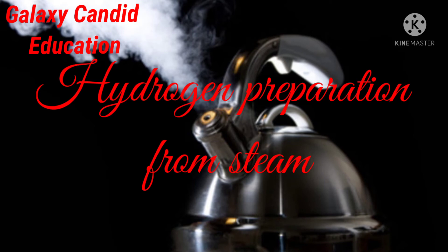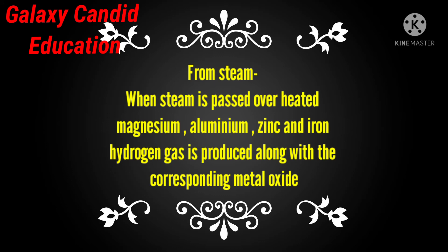Hydrogen preparation from steam: When steam is passed over heated magnesium, aluminium, zinc, and iron, hydrogen gas is produced along with the corresponding metal oxide. Heated magnesium reacts with steam to produce magnesium oxide and hydrogen. Similarly, heated aluminium produces aluminium oxide and hydrogen. Heated zinc produces zinc oxide and hydrogen. Iron reacts with steam to produce iron second and third oxide (Fe₃O₄) along with hydrogen gas.